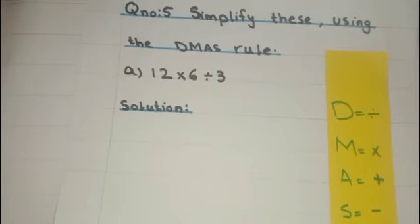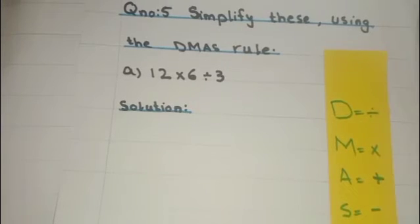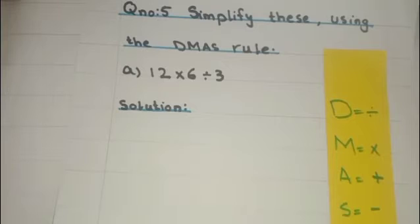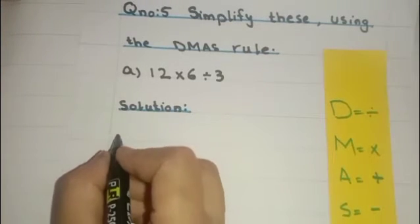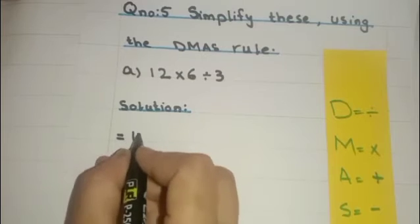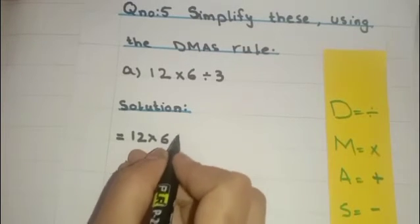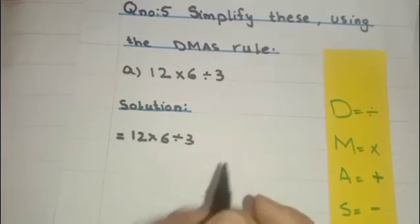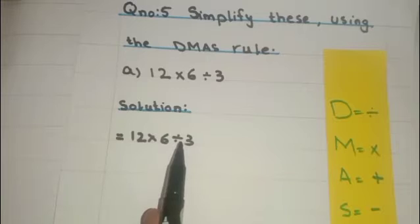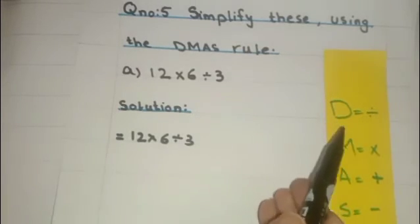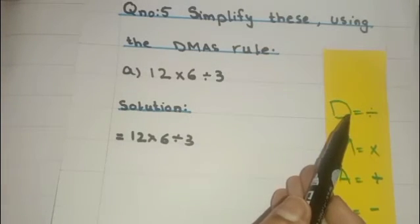Let's elaborate this with the help of example. It is your question number 5, simplify these using the DMAS rule. Let's see part A: 12 multiply by 6 divided by 3. First of all we will write the heading of solution, after that we will start our solution by writing the question. Okay students, in this question we have two operations, multiply and divide. According to DMAS we have to divide first.